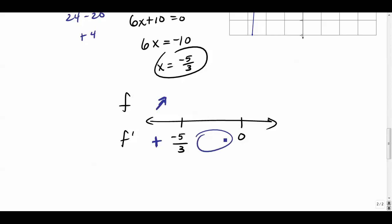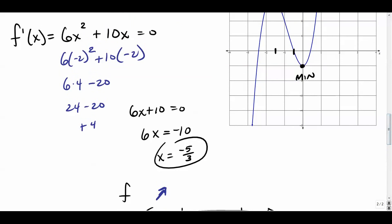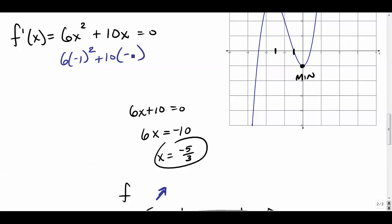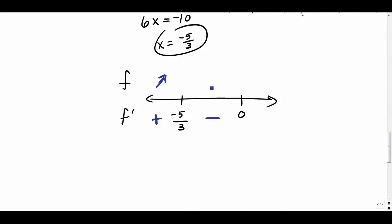In between negative five-thirds and zero, let's test negative one. Six times negative one squared plus ten times negative one equals six minus ten equals negative four. That's negative, so the graph goes downhill in that interval.